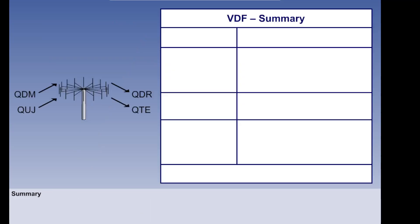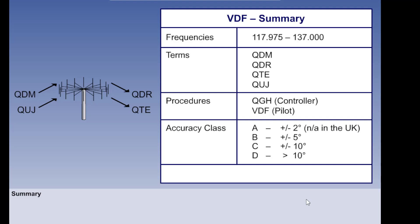These are the important points to remember. VDF uses the VHF frequencies of 117.975 to 137.0 MHz. Remember the Q codes for the various types of bearing. The approach procedure can be a QGH or a QDM-based VDF letdown. Remember the accuracy figures and that an auto-triangulation service is available in the UK on 121.5 MHz.